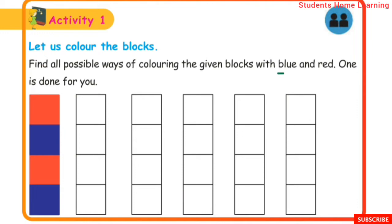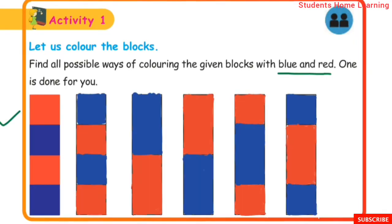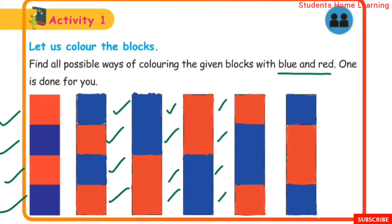The boxes are to be colored using blue and red. The possible ways include: red, blue, red, blue, red, blue — showing different arrangements of the two colors across the blocks.